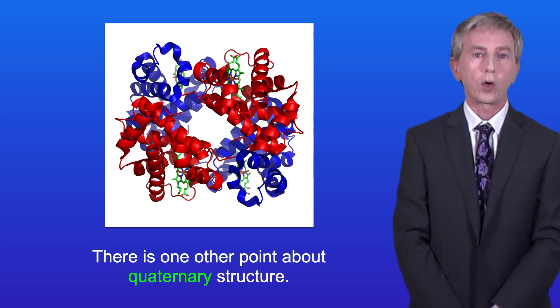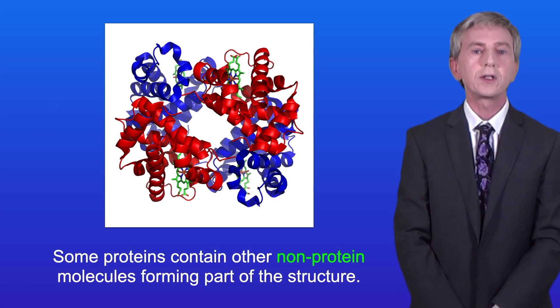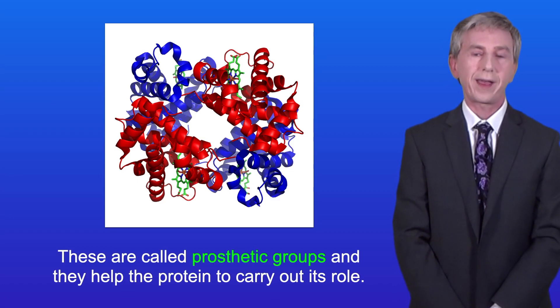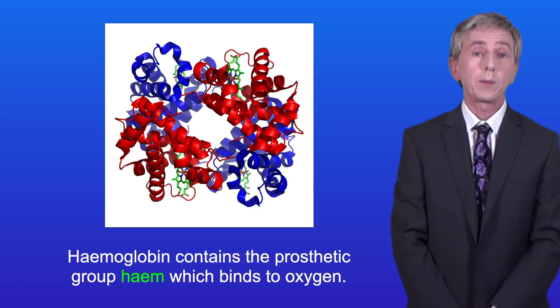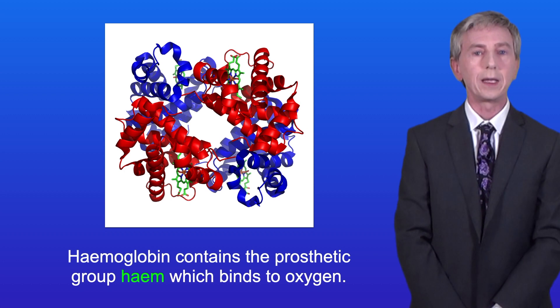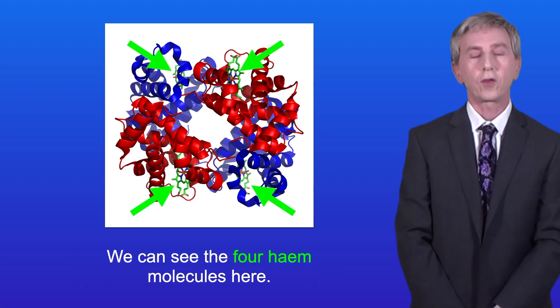There is one other point about quaternary structure. Some proteins contain other non-protein molecules forming part of the structure. These are called prosthetic groups, and they help the protein carry out its role. Hemoglobin contains the prosthetic group heme, which binds to oxygen, and we can see the four heme molecules here.